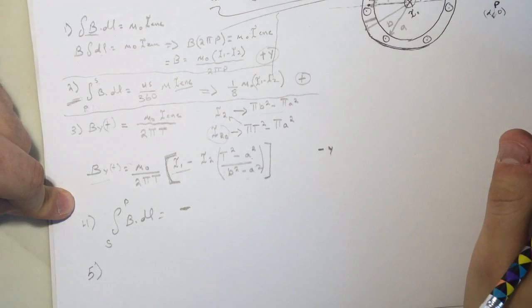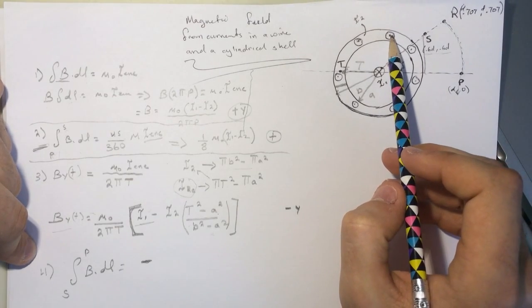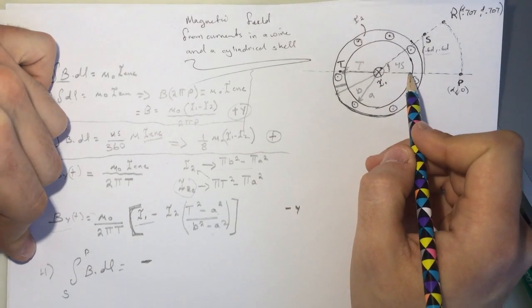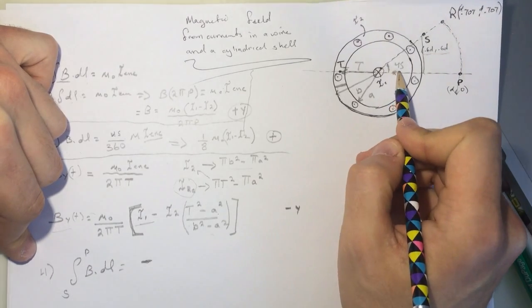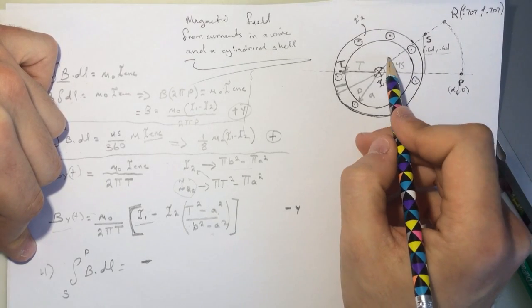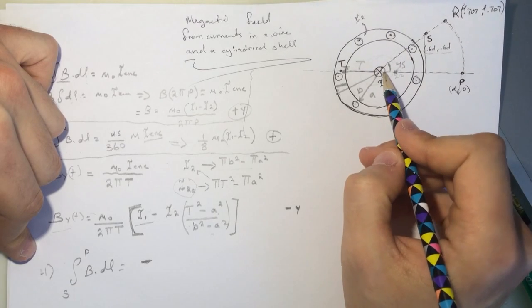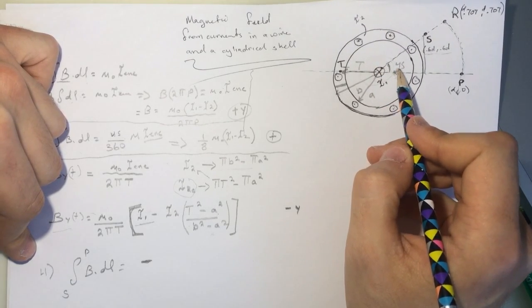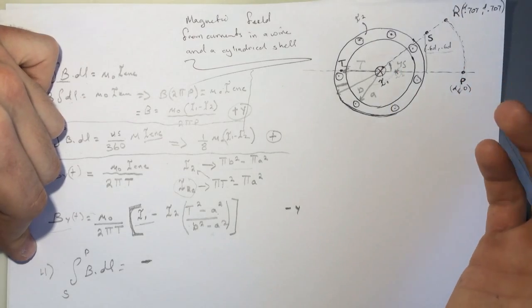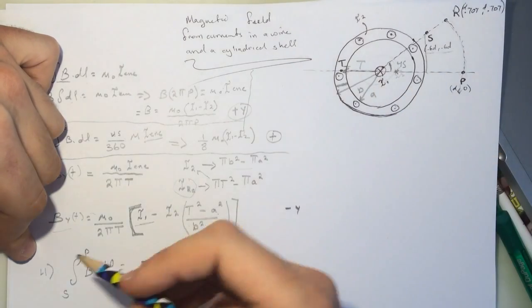So number five is saying, if we double this current here, what would happen to the magnetic field at point 2.2? So for me, 2.2 is here, somewhere inside. So if this doubles, then this would stay the same because the current enclosed is this guy. So if this doesn't change, then the magnetic field won't change because it depends on the current enclosed. So this won't affect even if it doubled. It's going to remain the same.